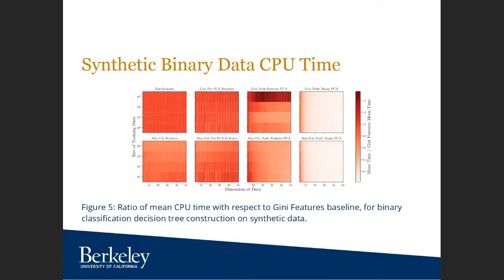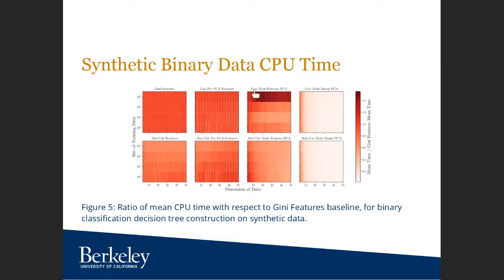Looking at running times: the Max Cut node means feature representation produces significant speedup compared to the baseline Gini features implementation. Importantly, the node features representation was outperforming in the high-observation regime, which is exactly the regime where it takes significantly longer computationally. The node means implementations do not suffer from this significantly longer computational time.